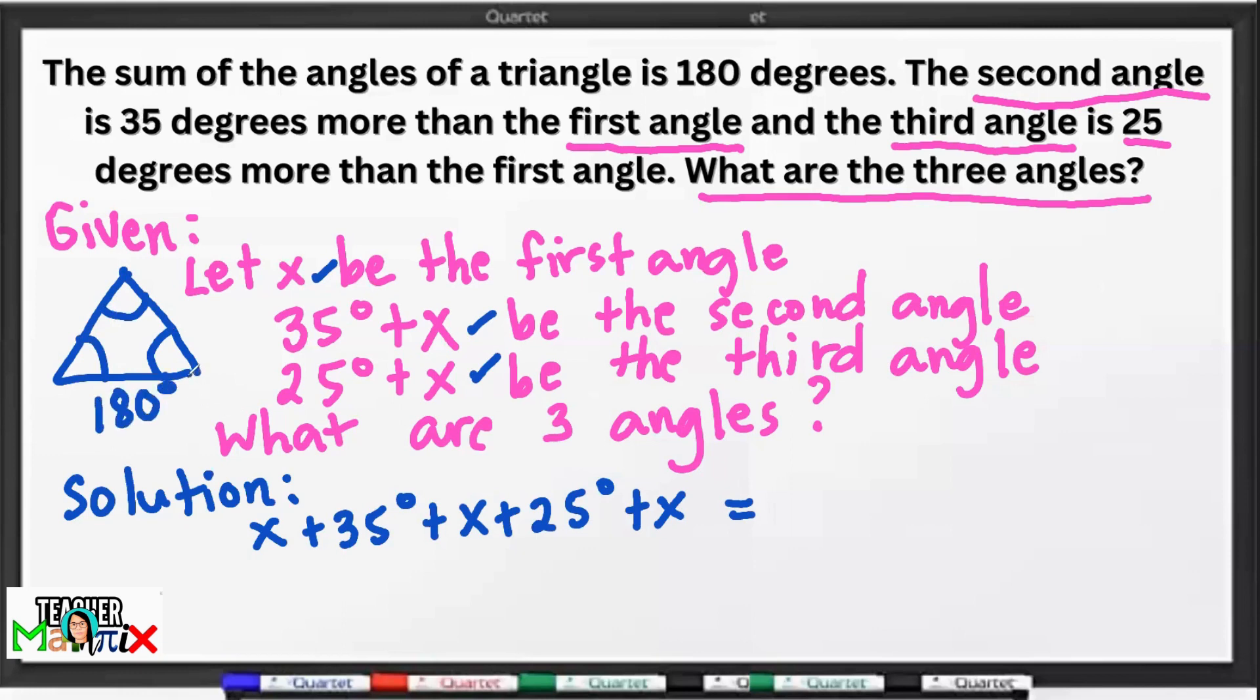Remember? When we talk about triangle, automatic yan. 180 degrees. Ang total. Pero later, depende yun sa klase ng triangle. Ito, equilateral man ito. Yung meron namang mga scalene. Meron din isosceles. A total of 180 degrees.